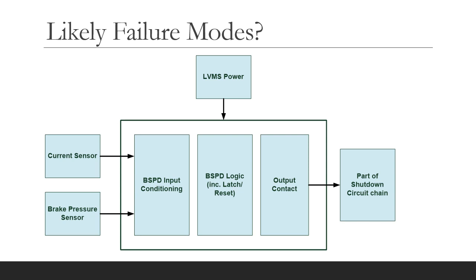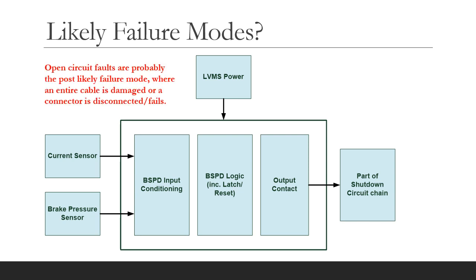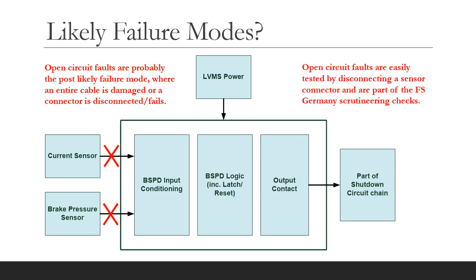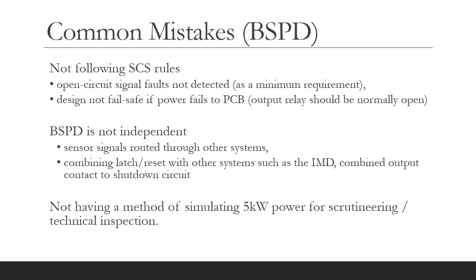We've seen that the BSPD is a quite simple circuit, but it is made more complex by the safety critical signals rules. Open circuit faults are probably the most likely failure mode, where an entire cable is severed or a connector becomes loose. Open circuit faults are very easily tested by disconnecting a sensor cable. Formula Student Germany does test that the BSPD has a safety critical design by disconnecting sensors. The most common mistake we see is not following the safety critical signals rules at all, and you may find that other competitions start to police the SCS rules more robustly.